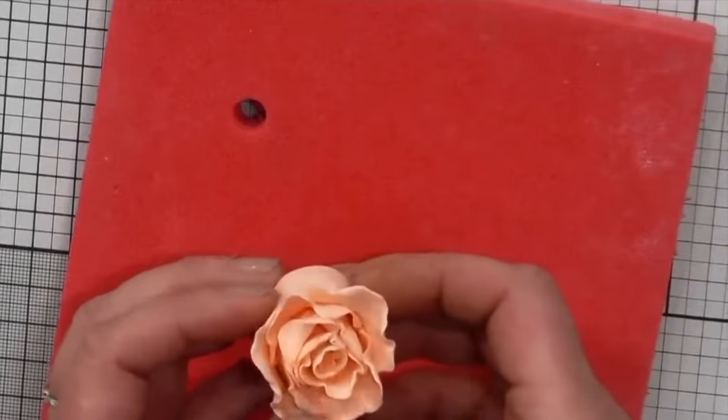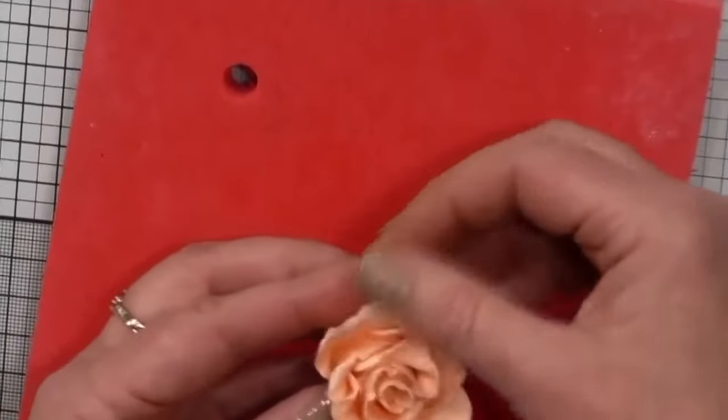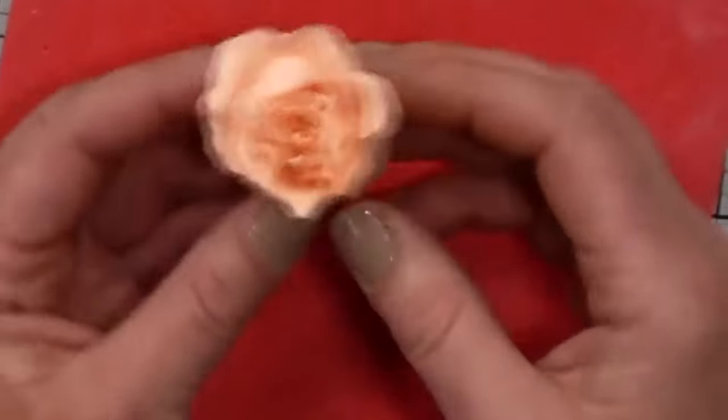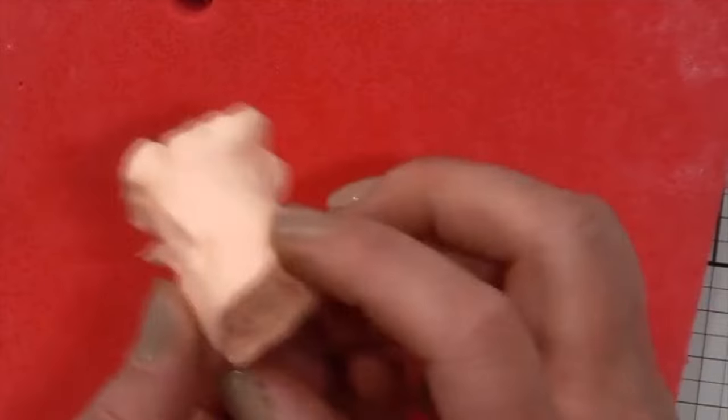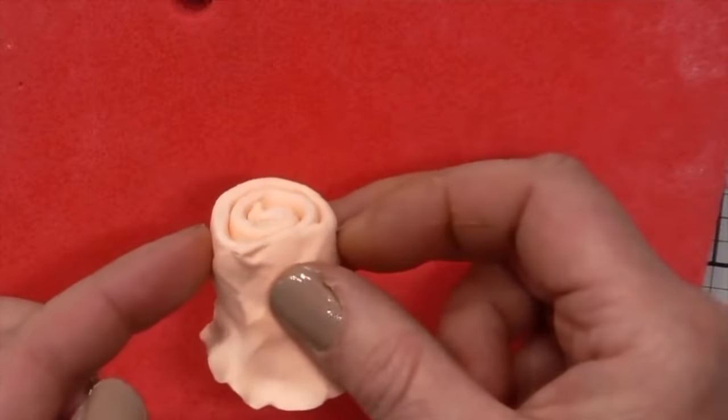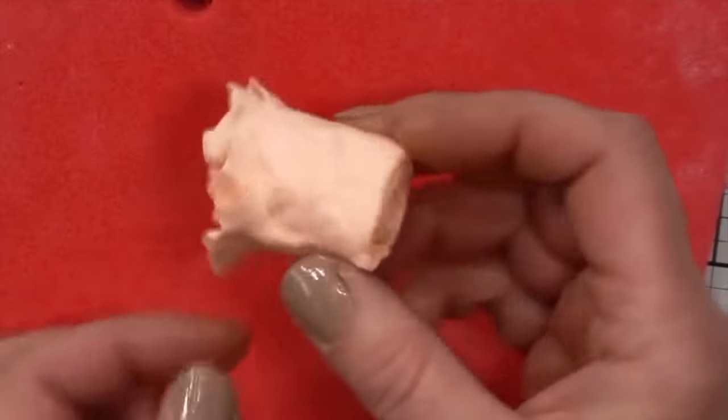So there from the top you can see I'm just going to open out those petals a little bit on the outer edge there. You can see we've got the flower. Beautiful. From the side and from the bottom it's looking very chunky so we're going to remove that now and that's very easy to do.